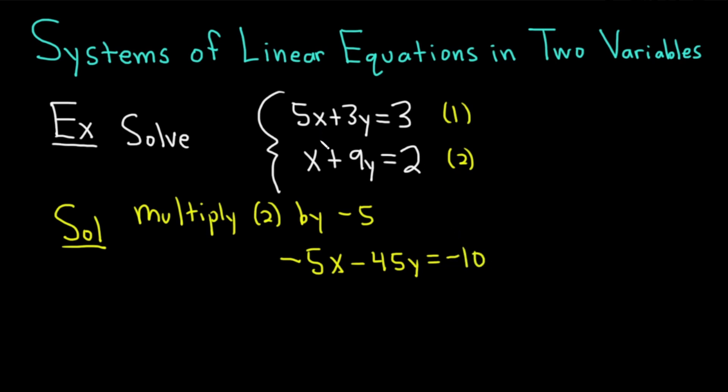And now what I'm going to do just for clarity is I'm going to write this first equation right below it. So 5x plus 3y equals 3. So again, we just multiplied that second equation by negative 5, and then I wrote the first equation right below it. Now we're going to add. So when you add these, you get negative 5x plus 5x, which is 0. Negative 45y plus 3y is negative 42y. And negative 10 plus 3 is negative 7.